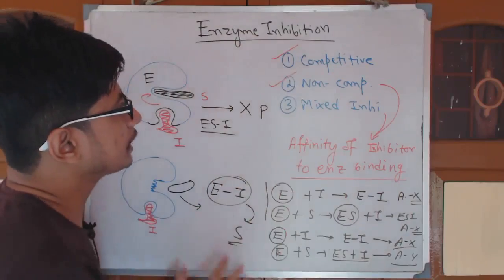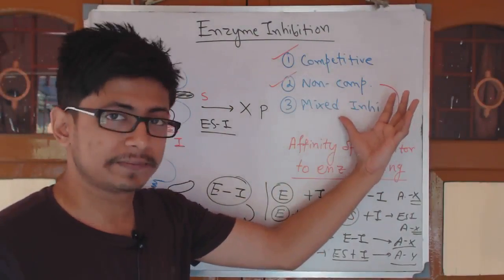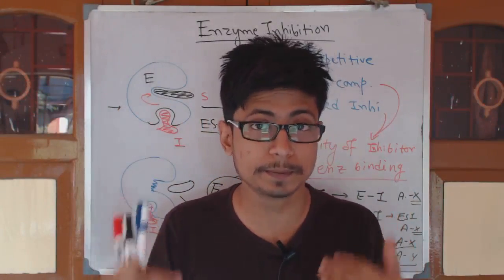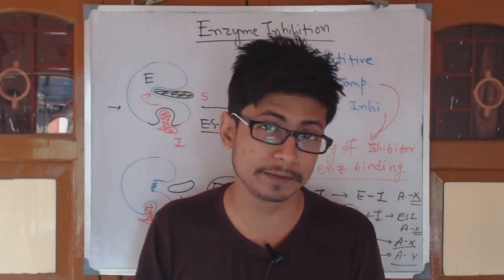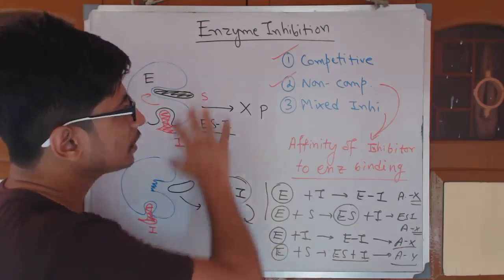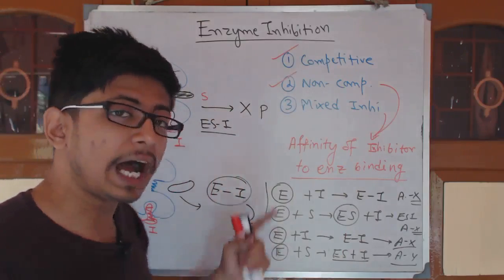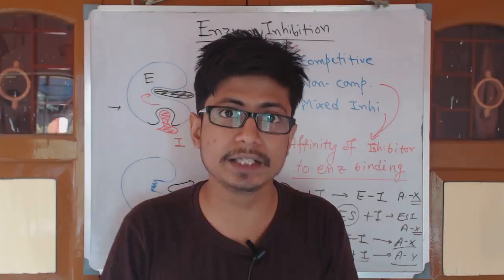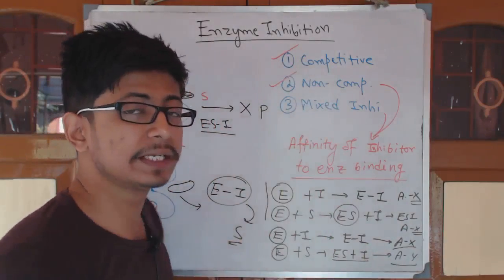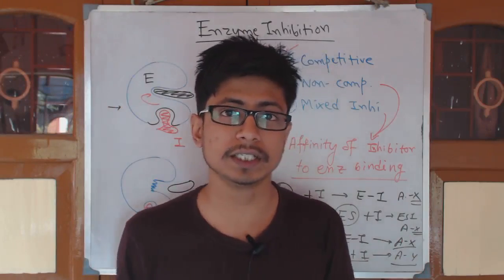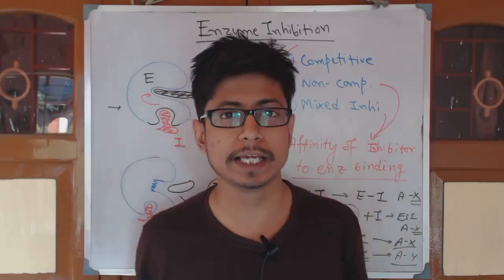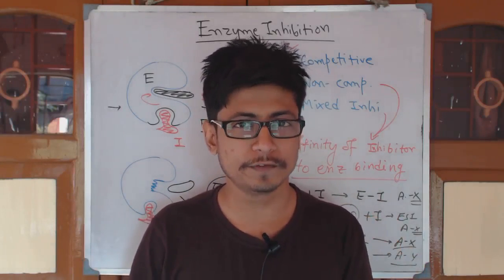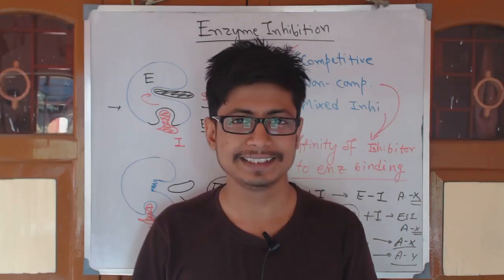These are the differences between the three types: competitive, non-competitive, and mixed. Competitive does not always mean substrate and inhibitor compete for the active site specifically — what matters is whether one or both can attach to the enzyme simultaneously. If the enzyme interacts with both together it is non-competitive or mixed; if it interacts with only one at a time, it is competitive. I hope this clears your concept — please hit the like button and subscribe to my channel. Thank you.